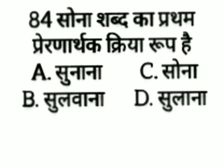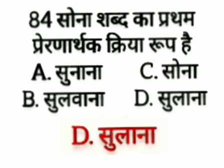Sona shabd ka pratham prernaartha kriya rup hai — option A: sunana, option B: sulwana, option C: sona, option D: sulana. The answer is option D, sulana. Pratham prernaartha kriya rup hai sulana. Dvithiya prernaartha kriya rup hai sulwana.